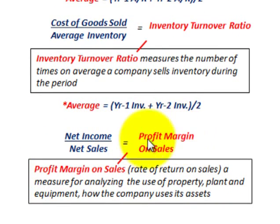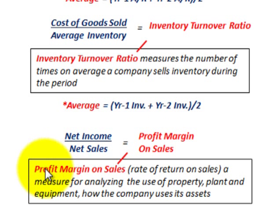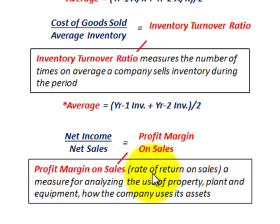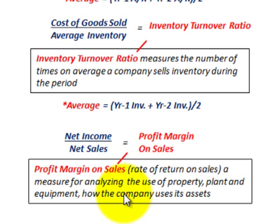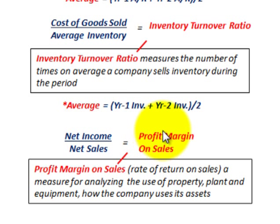Finally, let's look at the profit margin on sales — that is net income divided by net sales. Also called the rate of return on sales, it's a measure for analyzing the use of the company's property, plant, and equipment — essentially how the company uses its assets. So we just went through some quick ratios used to examine the liquidity of the company and also its use of assets.